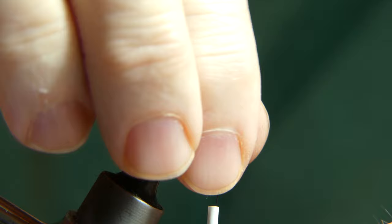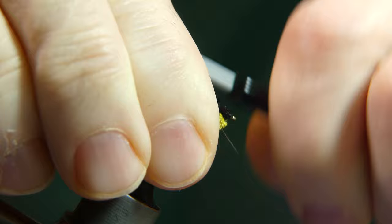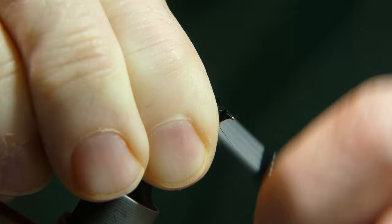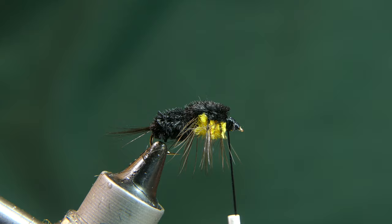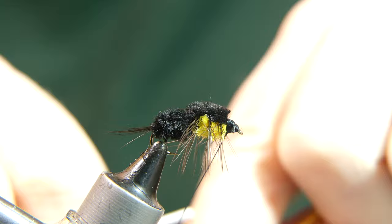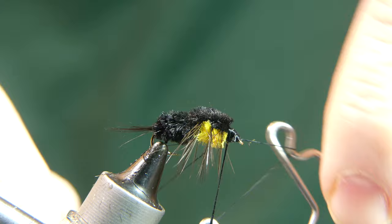Now you can stroke that hackle back out of the way. Make several more thread wraps to clean it up a little bit and make yourself a nice little black head. When you have it all dressed up, take your whip finish tool, give it a few wraps, and cut your thread away.